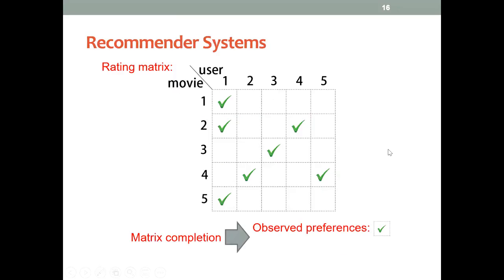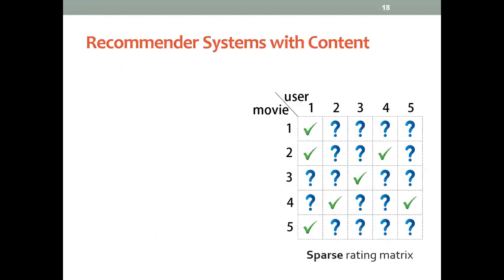Basically, recommender systems, as we all know, the problem is that we're given some observed preferences from users to items like movies, and the goal is to predict the unobserved preferences as accurately as possible. Unfortunately, usually we're given a very sparse rating matrix, so therefore we would rely on the content information of the items.